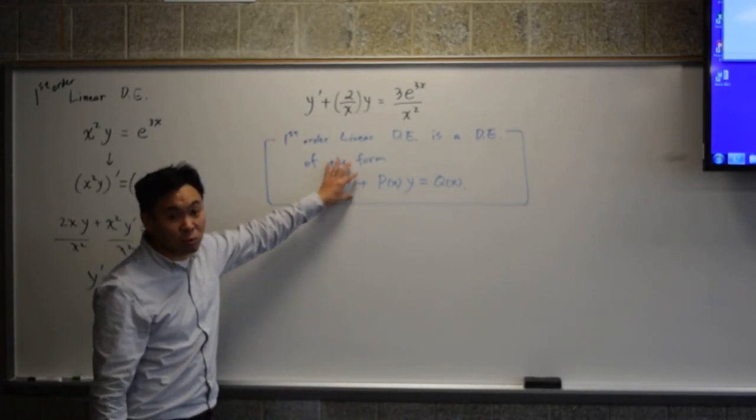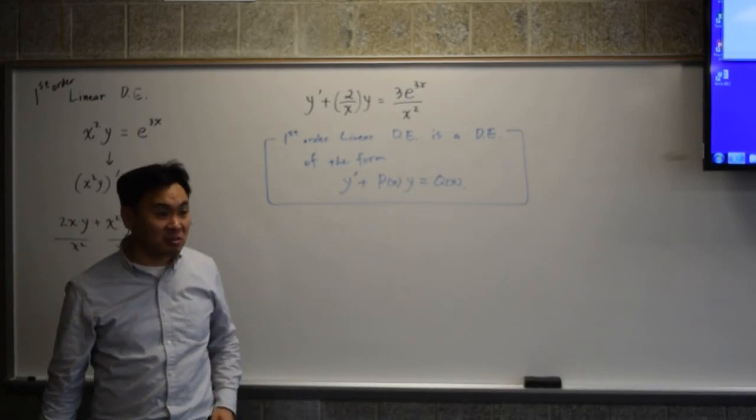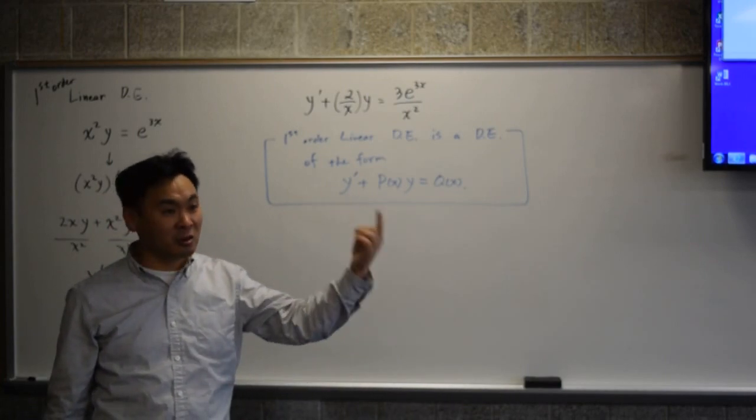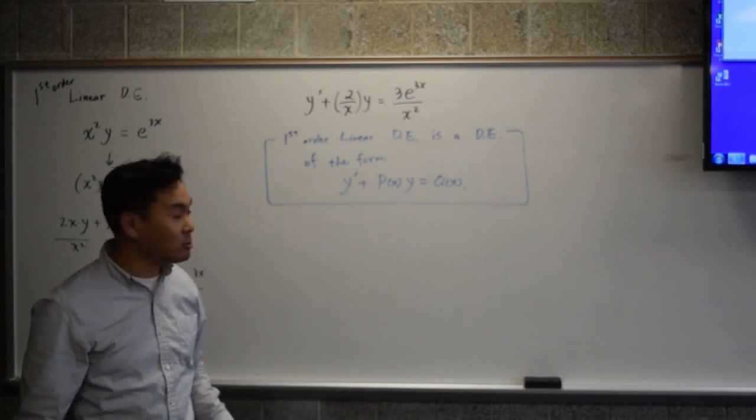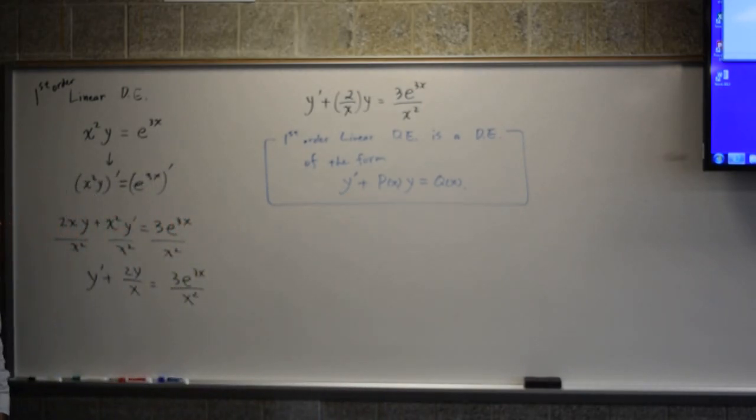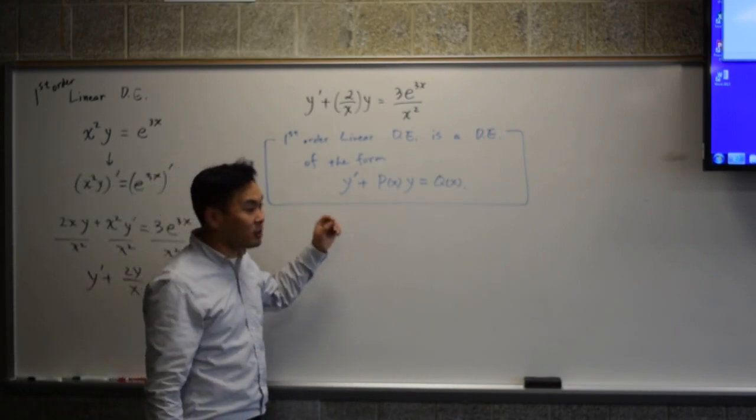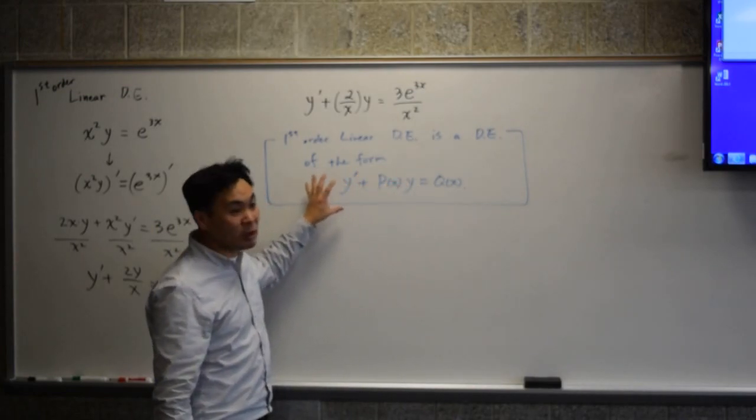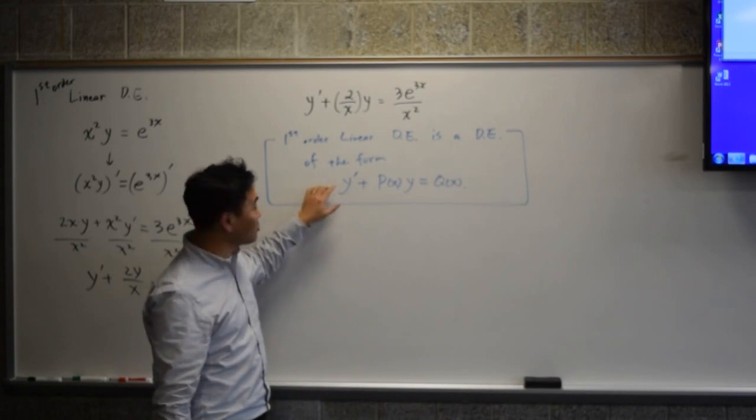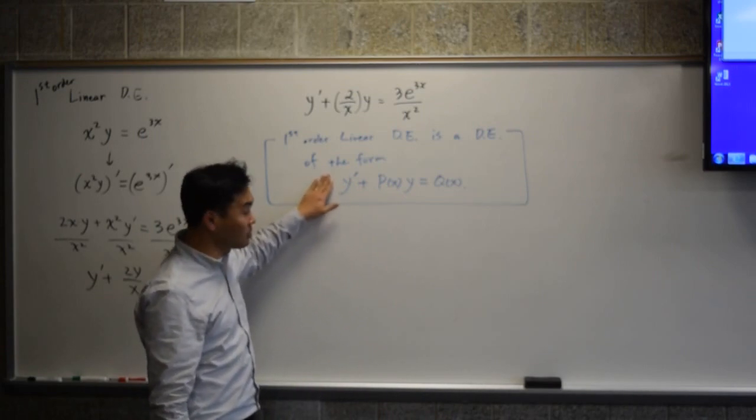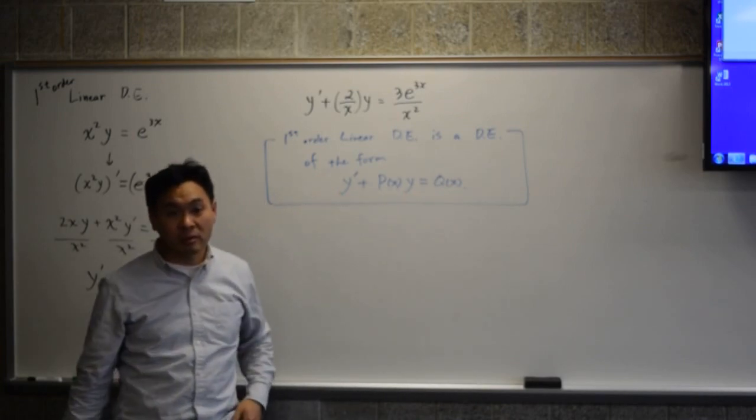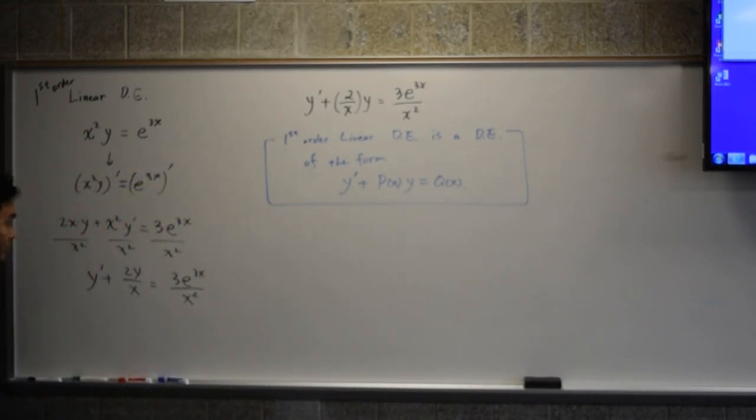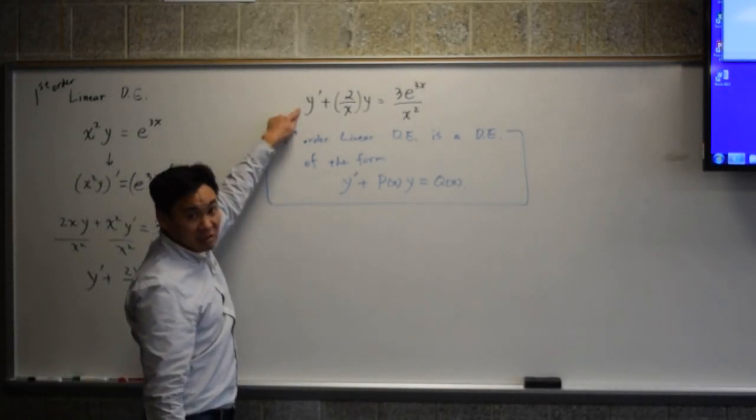So for example, if this was y prime squared, it would not be considered linear. Linear means order one. And you remember linear polynomial, quadratic polynomial, and cubic polynomial, and it goes up in that way, right? So it's rather easy to spot a first-order linear differential equation.